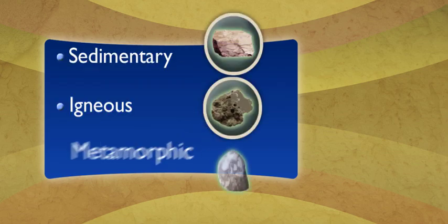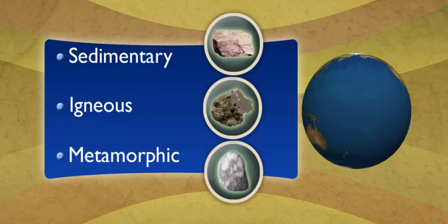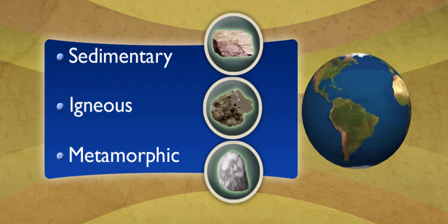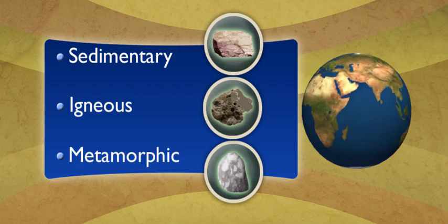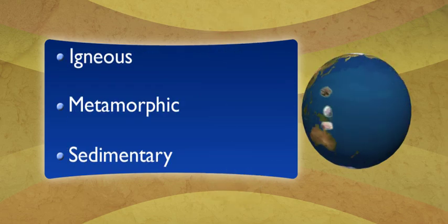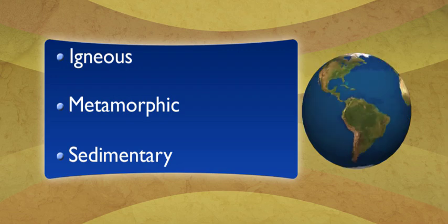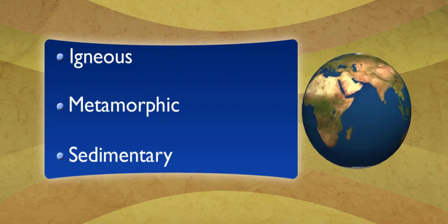Sedimentary, igneous, and metamorphic rocks. The whole Earth is made up of these three types of rocks, and they're constantly changing from one kind to another through the rock cycle. Wow, I thought rocks were just rocks. No way.